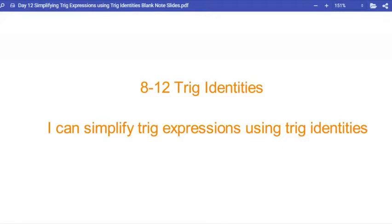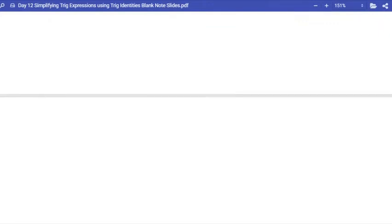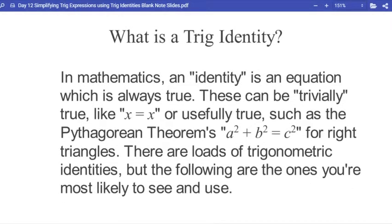Alright, okay. So if we're going to talk about trig identities, we should start by asking the question: what are they? In mathematics, an identity is an equation which is always true. These can be trivial, such as x equals x. We actually have a property named after that called the reflexive property. Regardless, that'd be a trivial case of two things being equal and always true.